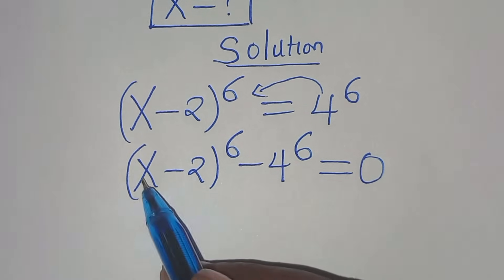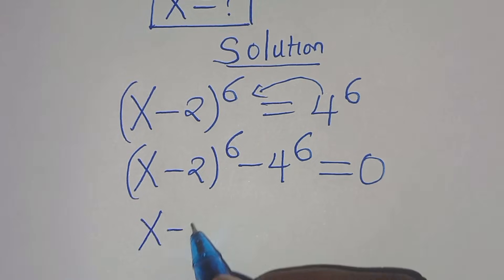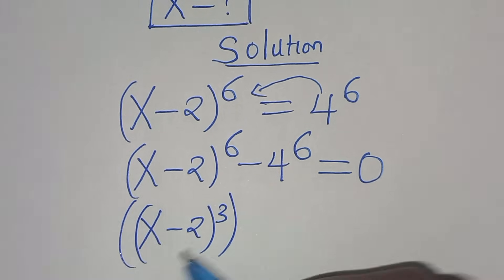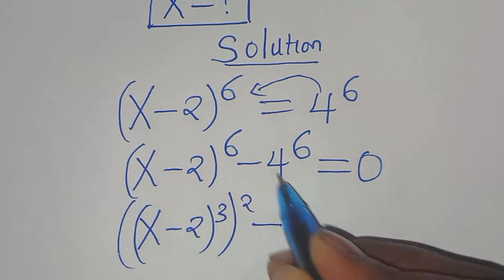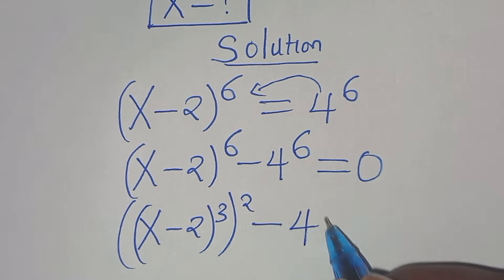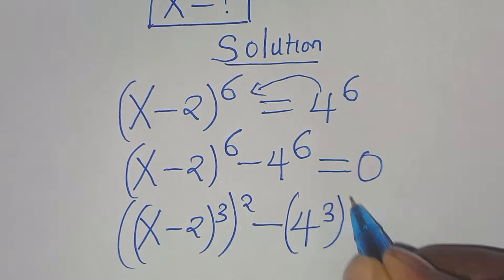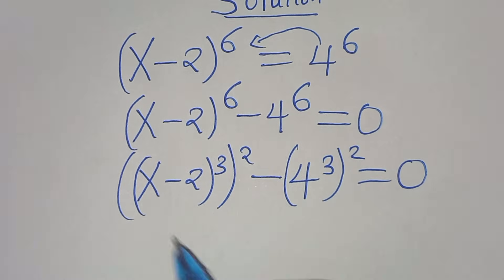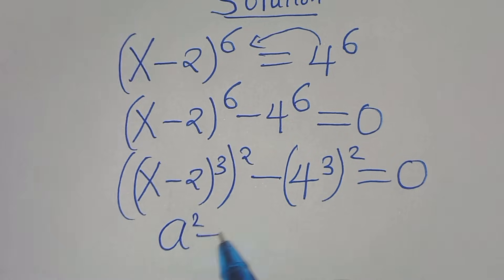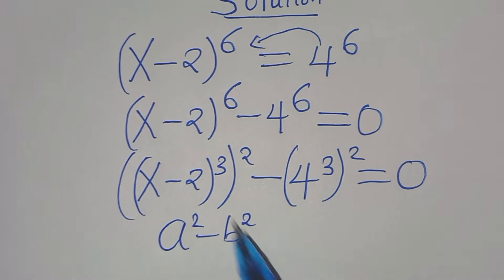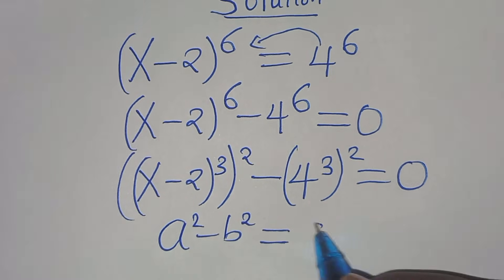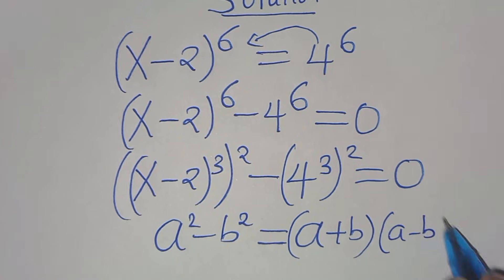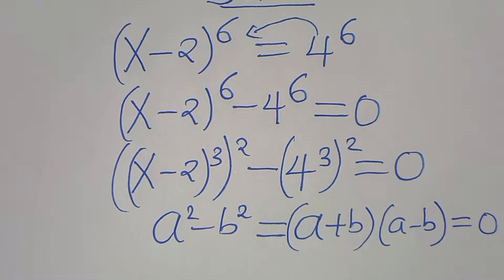We can express x minus 2 to the power of 6 as x minus 2 to the power of 3, then raised to the power of 2, minus 4 to the power of 6, which we can express as 4 to the power of 3 raised to the power of 2. This equals 0. This equation is in the form of a squared minus b squared — the difference of two perfect squares — which we can express as a plus b, times a minus b, equals 0.